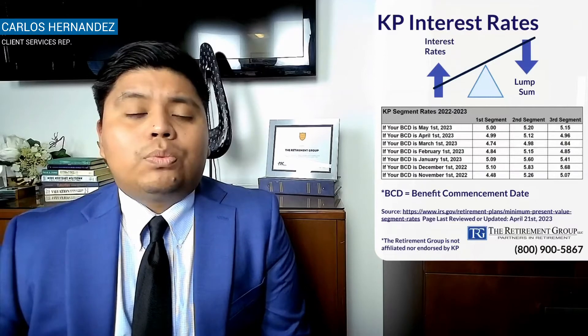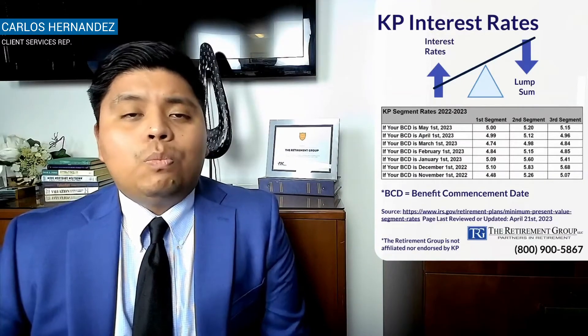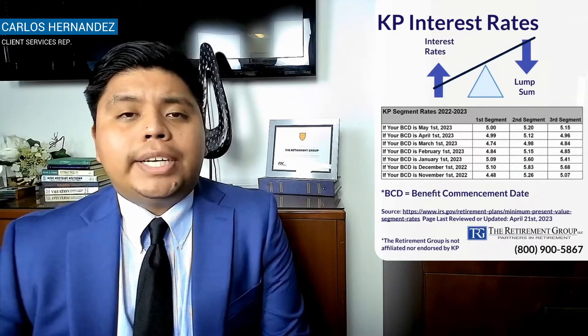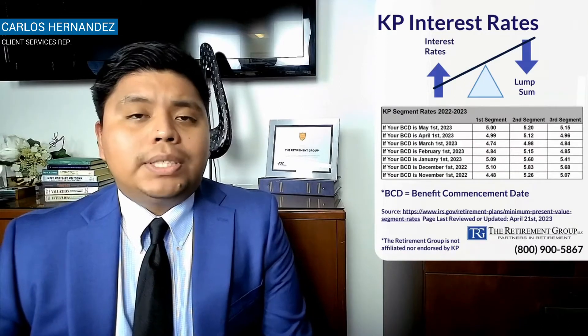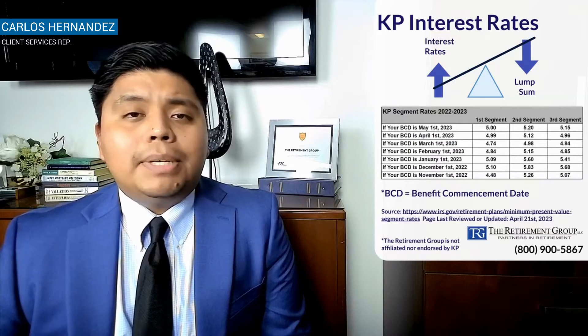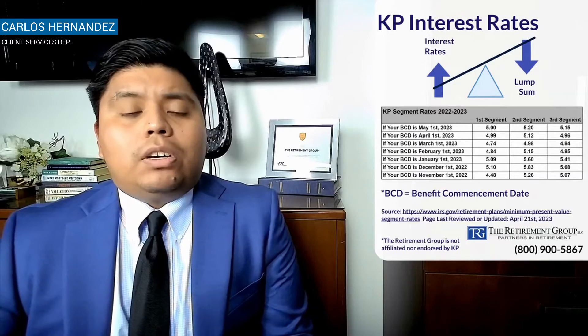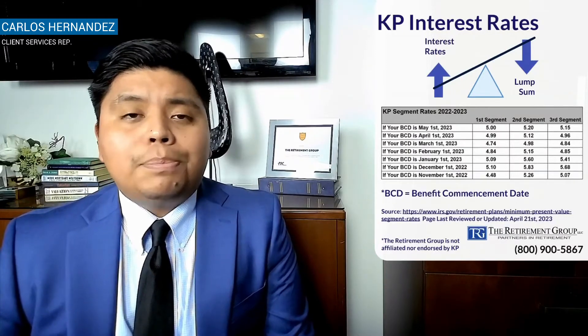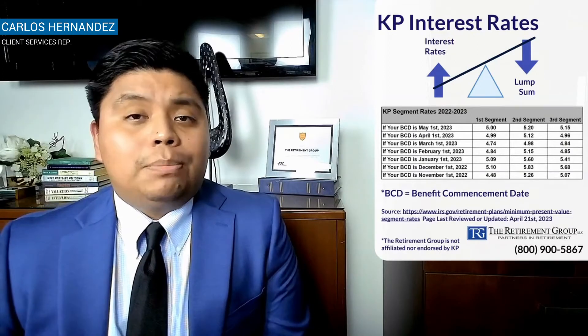Each one of these rates pertains to a specific period in your retirement. The first segment pertains to the first five years of retirement, years one through five. The second segment covers the next 15 years, years five through twenty. The third segment pertains to years twenty and above into your retirement. Depending on your age when you commence your benefit, that will determine which segment carries the most weight in your pension calculation. Importantly, these rates are specifically used for your lump sum payment option only — they are not used to calculate your single life annuity or any other annuity options, and that is a common misinterpretation.